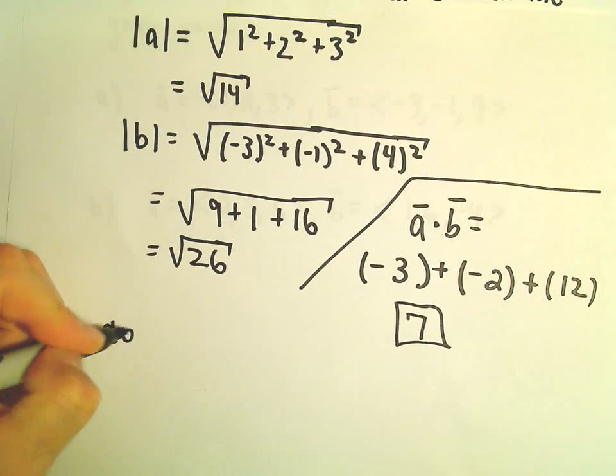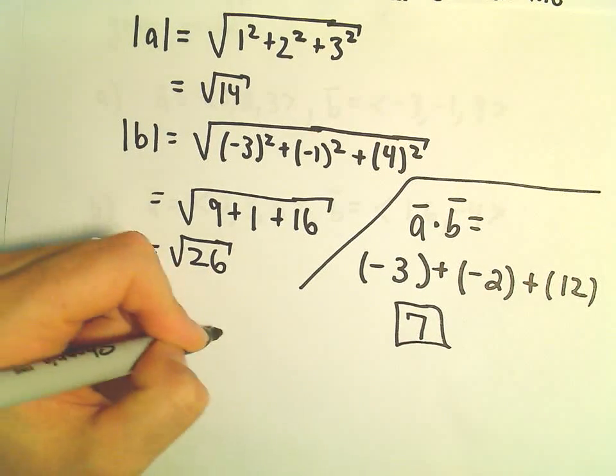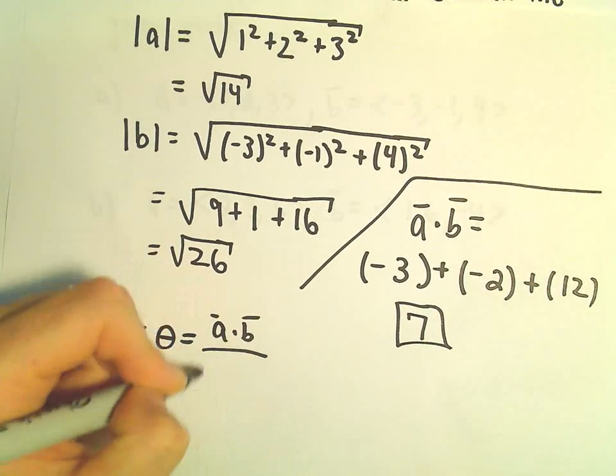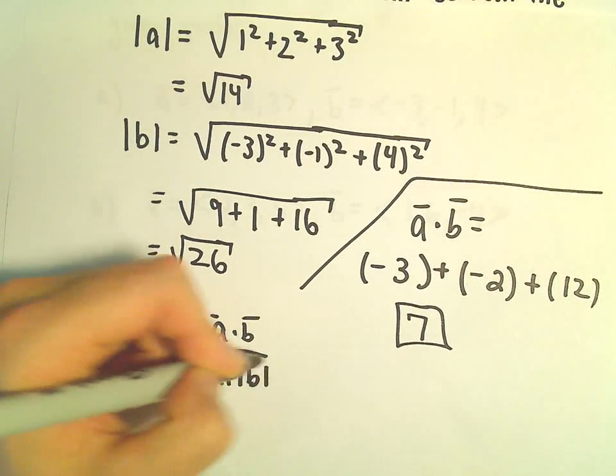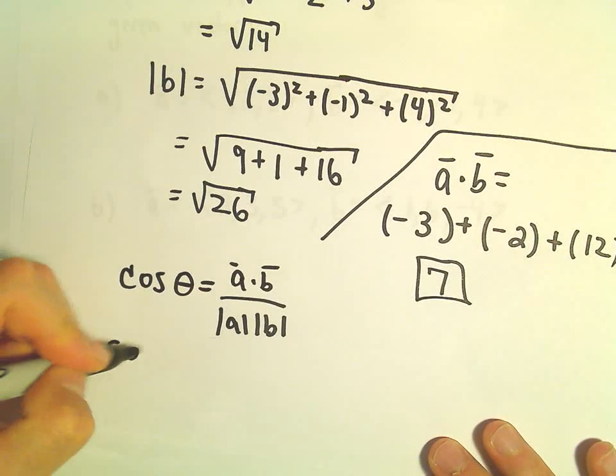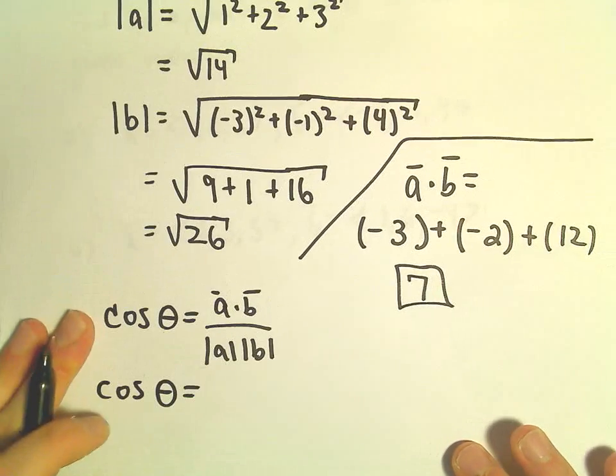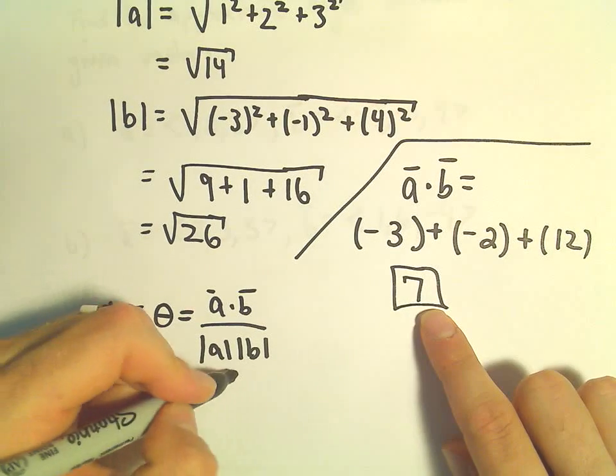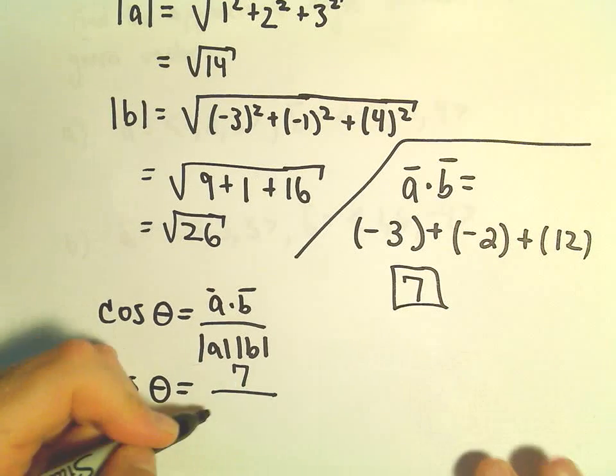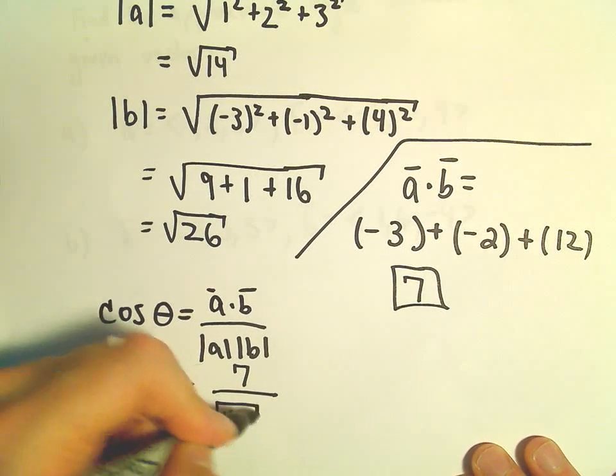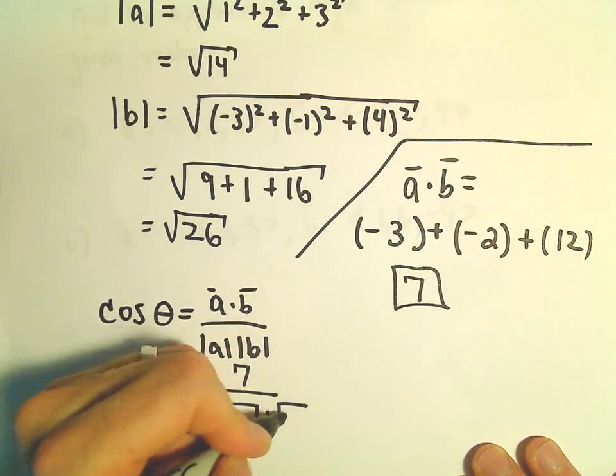So when we use our formula, we'll have cosine of theta. That's a dot b over the magnitude of a times the magnitude of b. So we'll get cosine of theta equals the dot product was equal to 7. And then we have the square root of 14 times the square root of 26.